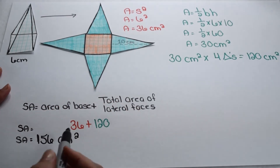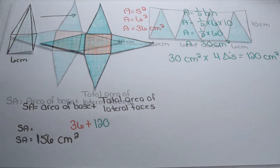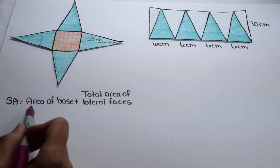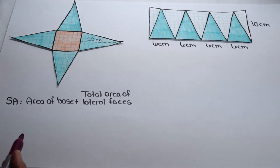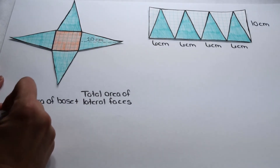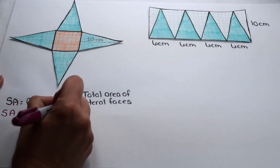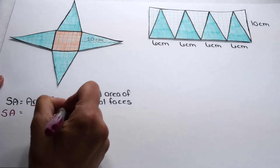Surface area is a two-dimensional measurement, so it's labeled to the second power. Since our base is a regular polygon, let's see if we can condense our equation to something more specific for pyramids with regular polygon bases. The area of the base we can substitute in with capital B.